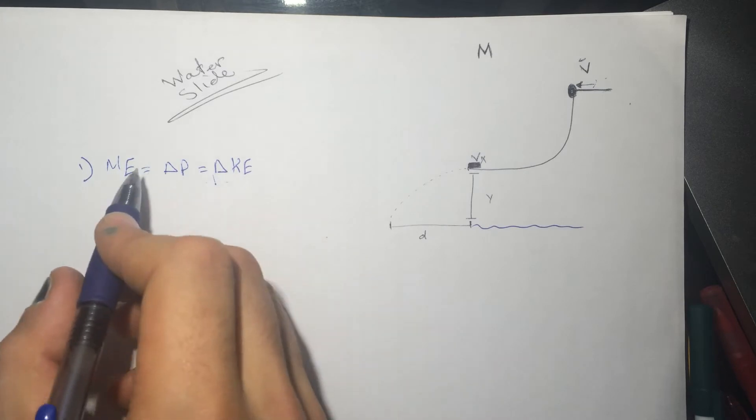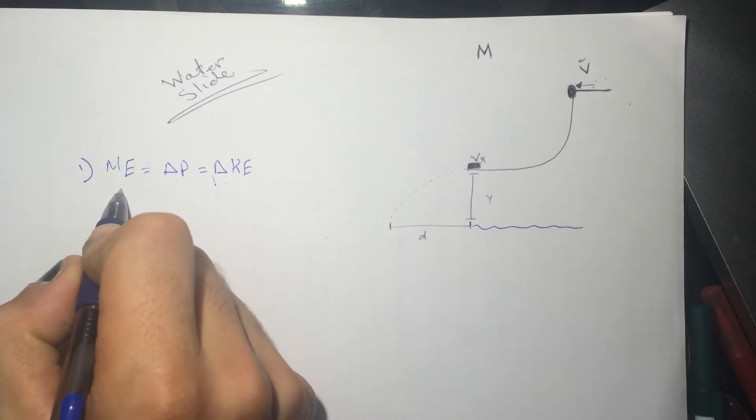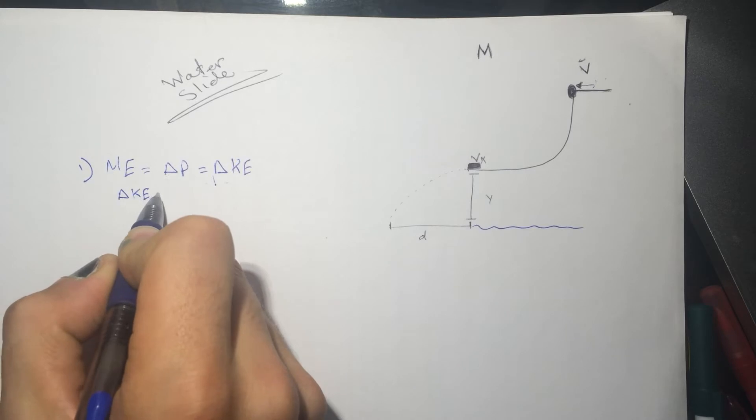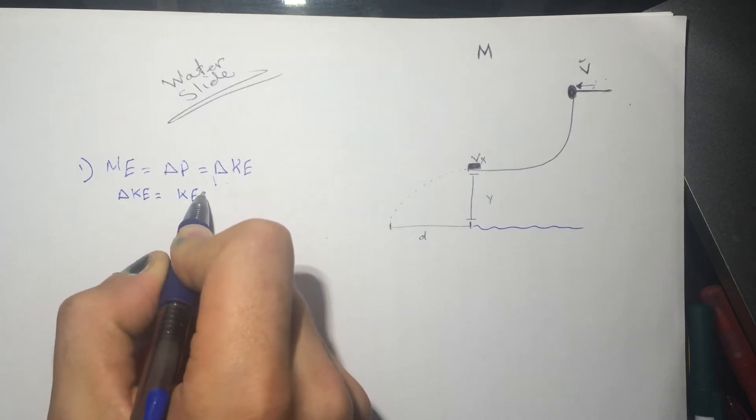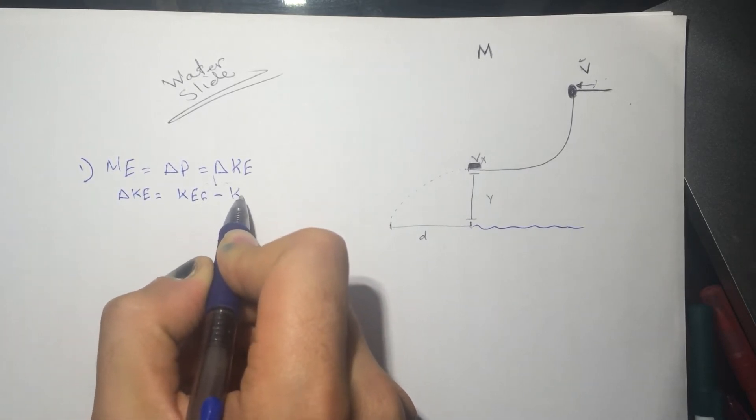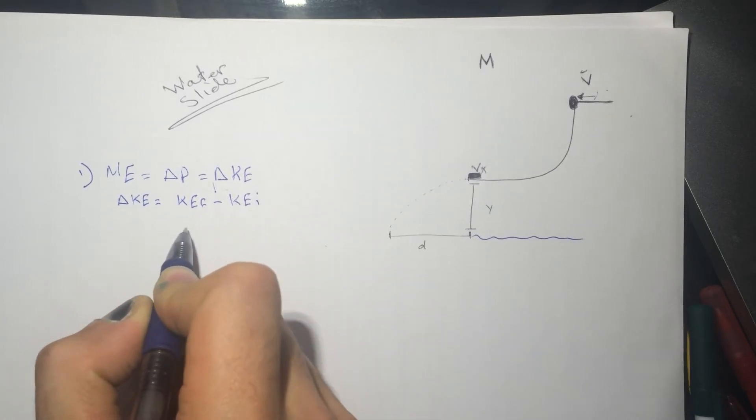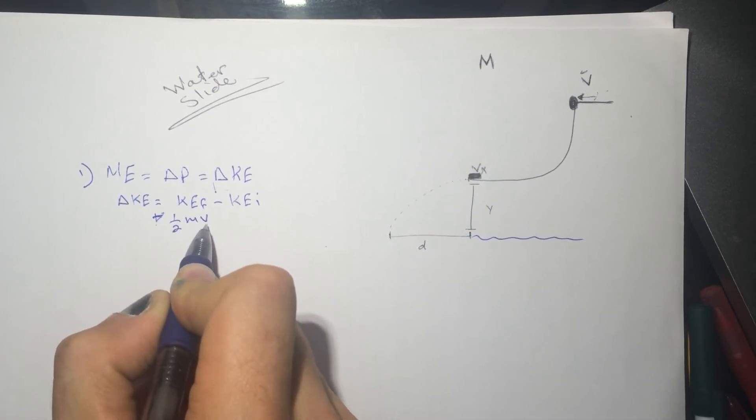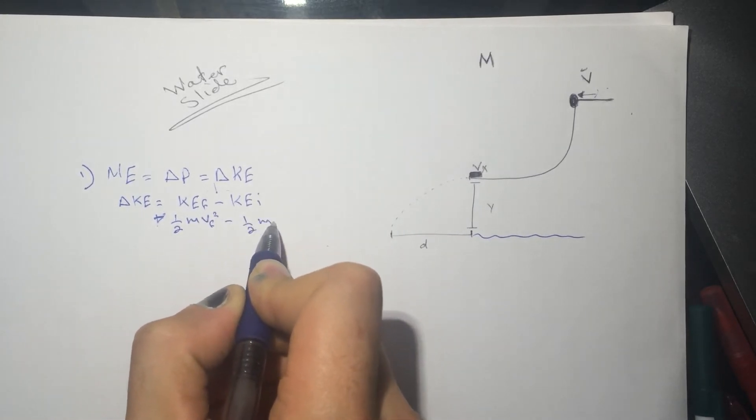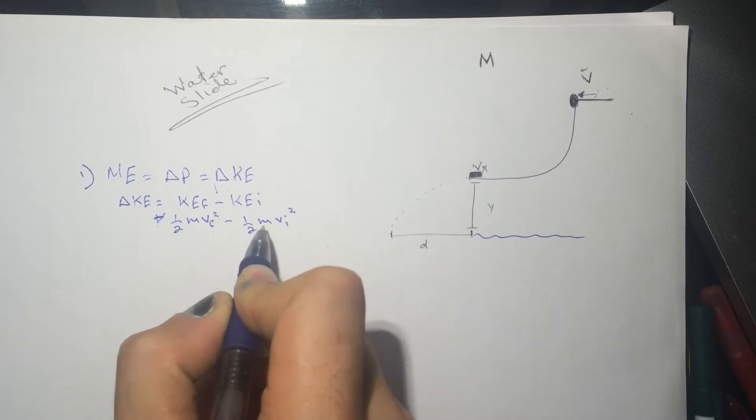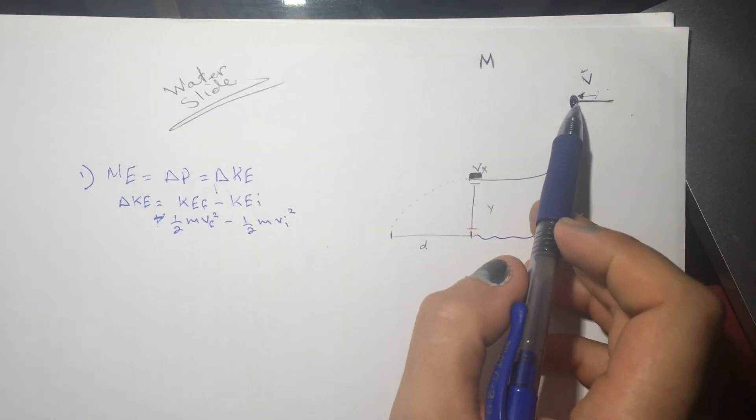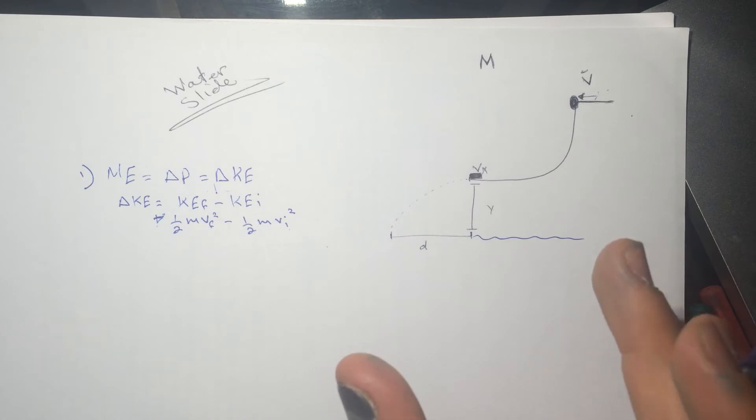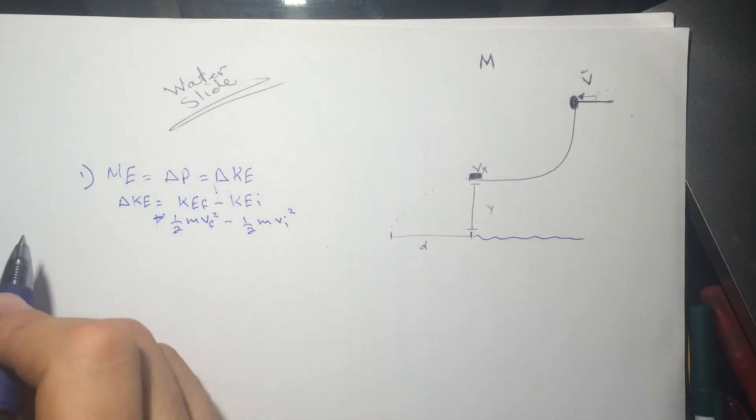So changing kinetic energy is equal to KE final minus KE initial. So it's half M V final squared minus half M V initial squared. Well, we got the initial, which is the one they gave us, the whole velocity, the whole velocity.